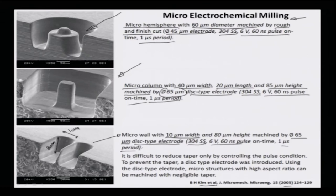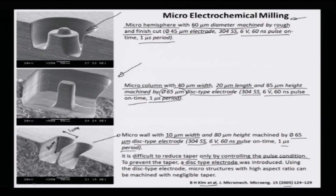One key learning is that it is very difficult to reduce taper by controlling pulse conditions alone, since electrochemical machining is a self-tapering process. A better idea is to use a disc-type electrode, which enables high aspect ratio microstructures. If the milling tool is disc-shaped, high aspect ratios can be achieved.